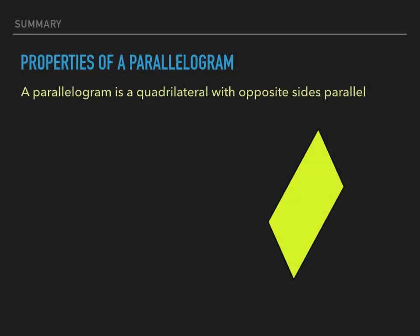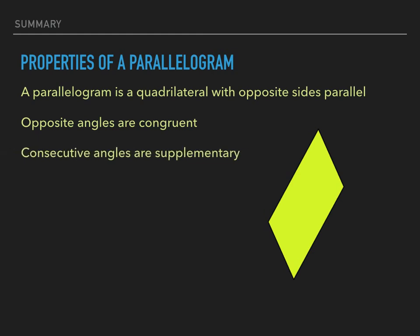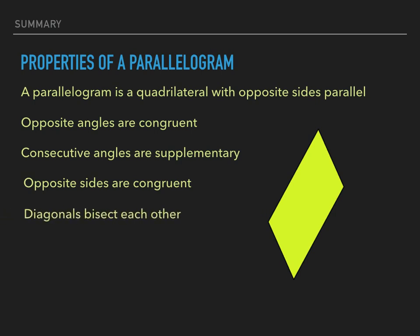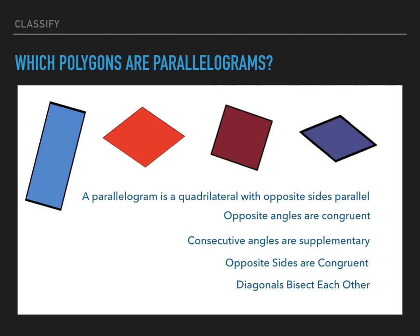Let's summarize what we talked about in this video. We started with the definition of a parallelogram: a quadrilateral with opposite sides parallel. Then we covered the properties: opposite angles are congruent, consecutive angles are supplementary, opposite sides are congruent, and the diagonals bisect each other. All of these properties hold true for any figure classified as a parallelogram — including rectangles, rhombuses, squares, and parallelograms.